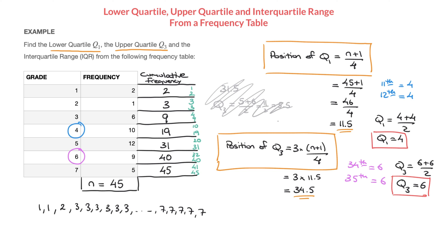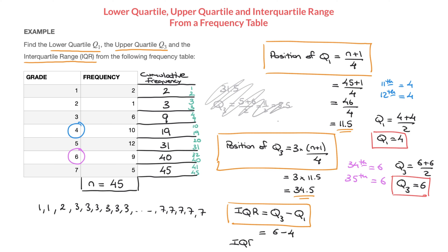Finally, we find the interquartile range IQR using the formula: IQR = Q3 − Q1. Using our results of Q3 = 6 and Q1 = 4, the interquartile range is 6 − 4 = 2. We now know how to find the lower quartile, upper quartile, and interquartile range from a frequency table. Remember, the formulas give us the position of Q1 and Q3, not their actual values. That's it for this tutorial.